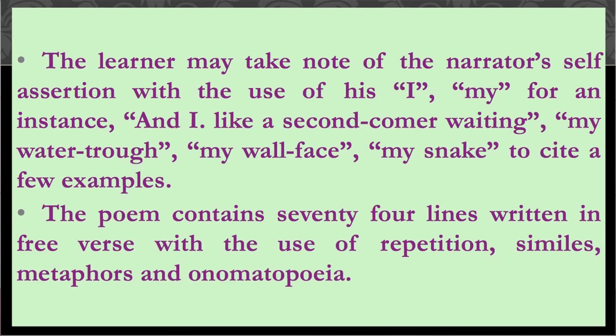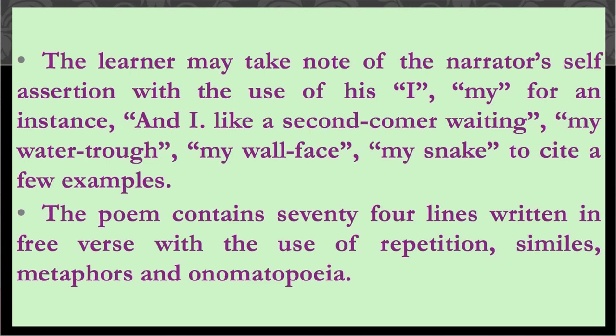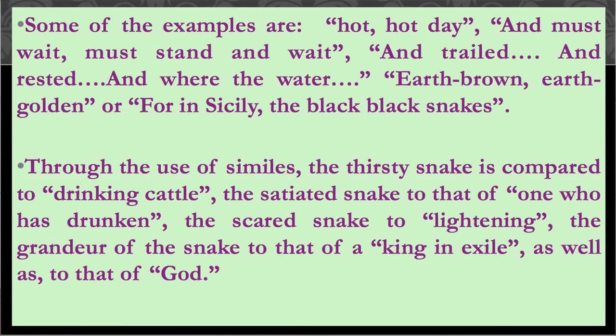After reading the poem you will get a better idea of these examples. The poem contains 74 lines written in free verse, with the use of repetition, similes, metaphors, and onomatopoeia. The narrator emphasizes his description of the snake's presence and his own response through repetitive phrases. Through the use of similes, the thirsty snake is compared to 'drinking cattle,' the satiated snake is compared to 'one who has drunken,' and the scared snake is compared to lightning.